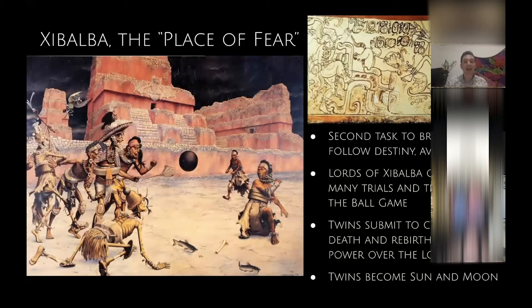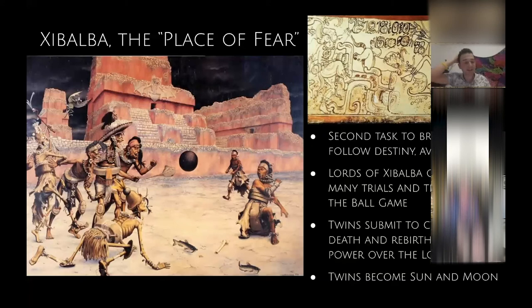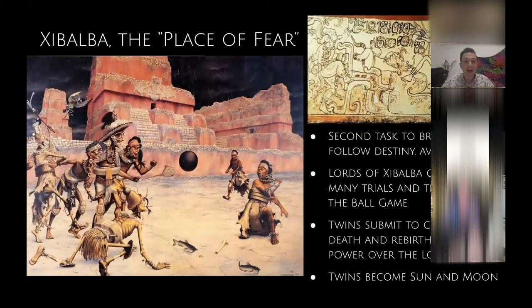Finally they get to play the ball game. Their last challenge, the night before the ball game, is spending a night in a chamber full of bats. Hunahpu, one of the twins, is beheaded by a bat monster — very obviously paralleling what happened to his father in the previous version. Everything is repeating itself. But this time he has his brother with him to help. His brother creates a false head for him using a calabash gourd from the ground, and then they're able to play the game.